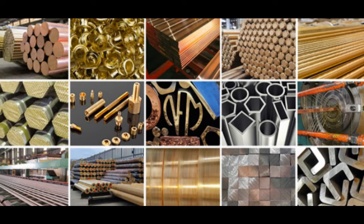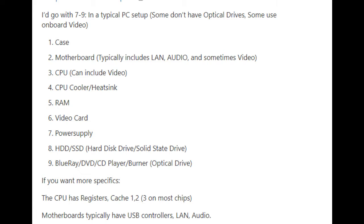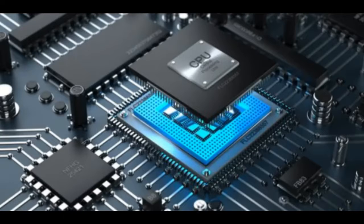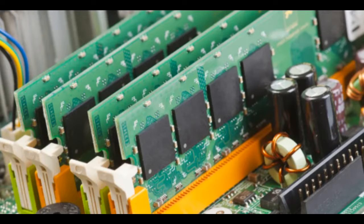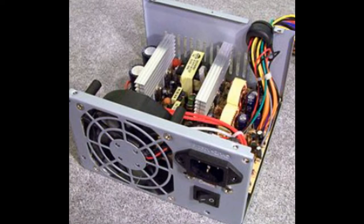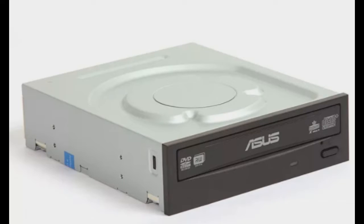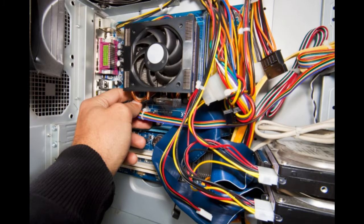So how is a computer made from sand, metals, and other resources? And the journey begins. Here are the main components that make up a typical PC desktop computer: the computer case, the motherboard, the CPU, the CPU heatsink cooler, RAM, video card, the power supply, the hard disk drive or solid state drive, and the optical drive, plus all the various cables connecting these together.